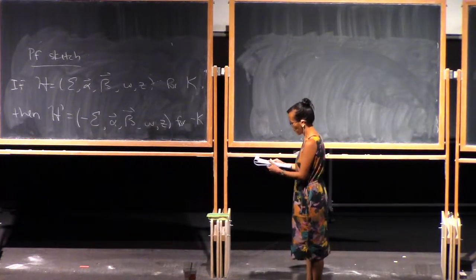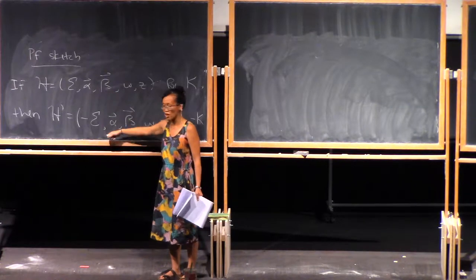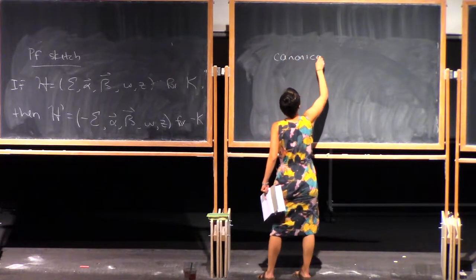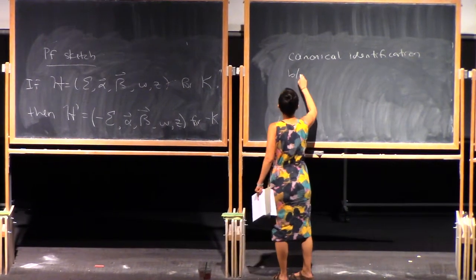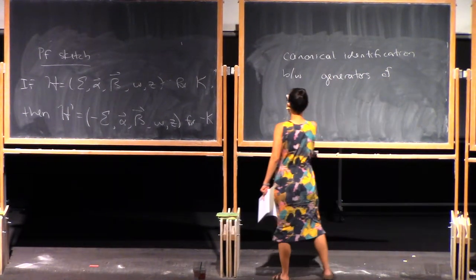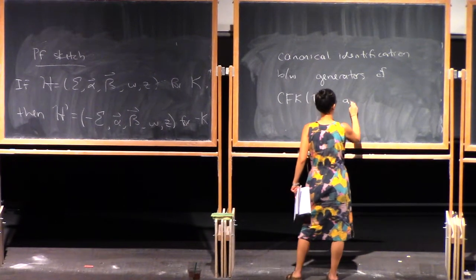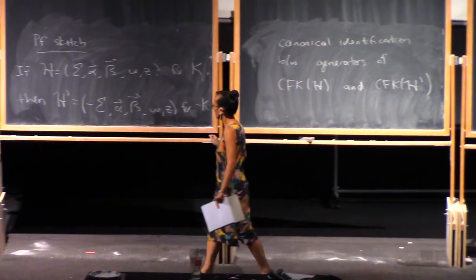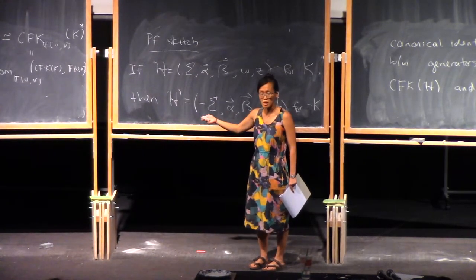So now we have two Heegaard diagrams that are very closely related. In particular, there's a canonical identification between the generators of the chain complex associated to this diagram and the one associated to the other one. But notice we changed the orientation of sigma, so that's going to change the orientation of Sym^g of sigma.